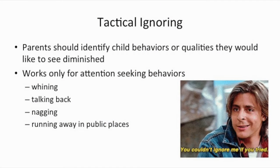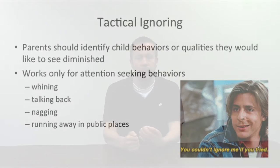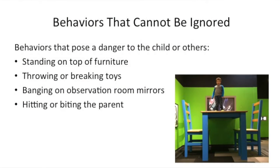Tactical ignoring is basically the opposite. Parents should identify behaviors they would like to see diminished — such as whining, talking back, and nagging — and tactically ignore them. However, some behaviors cannot be ignored because they may pose a danger, such as standing on top of furniture, throwing or breaking toys, banging on an observation room window, or hitting or biting a parent.